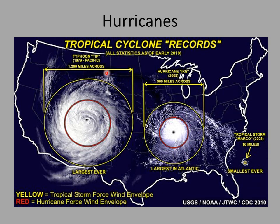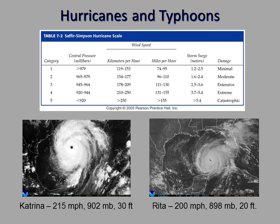Here are some sizes: Typhoon Tip was 1,200 miles across — a monster. Hurricane Ike was the largest in the Atlantic, and then there's little tiny Marco. There's the Saffir-Simpson hurricane scale — category one through five. One's not so big, five's really big, but a category one is still a hurricane with sustained winds of 74 to 95 miles an hour — you should definitely seek shelter. The bigger the hurricane, the bigger the storm surge. As hurricanes spin, they build up huge piles of ocean water through waves underneath them, and when the hurricane makes land, those piles slosh up on shore and are very destructive.